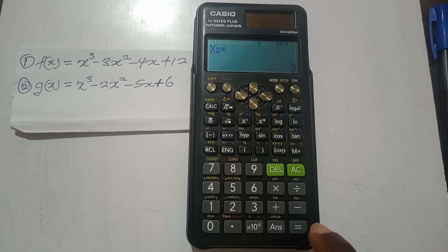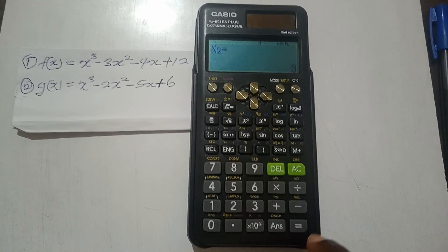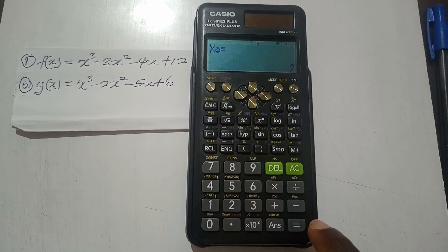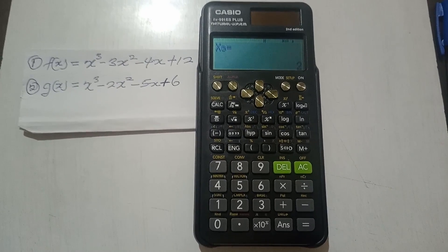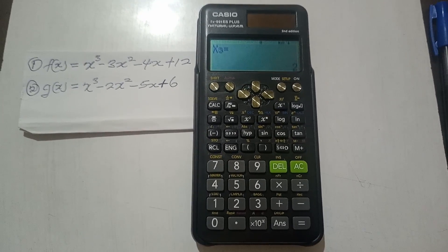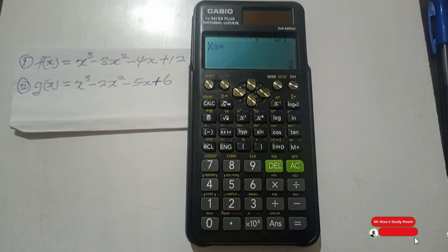And then equal to again, the third solution is 2. So a cubic function usually will give you 3 solutions because the highest power is 3. This is how we go about it.